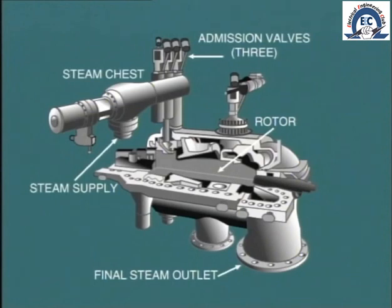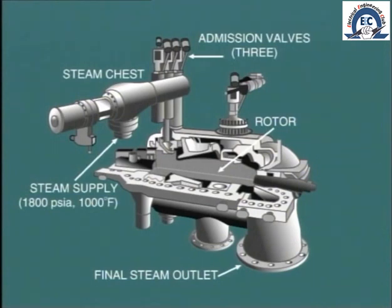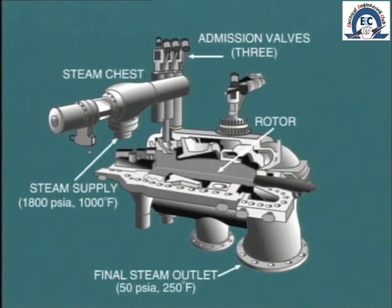How it actually functions and produces power. As we all know, steam at high pressure and temperature — say 1800 PSIA and 1000 degrees Fahrenheit — is admitted at one end of the turbine. After passing through the turbine, this steam exits at a much lower pressure and temperature, say 50 PSIA and 250 degrees Fahrenheit, for a typical back pressure turbine.